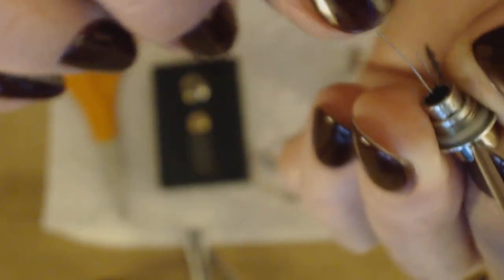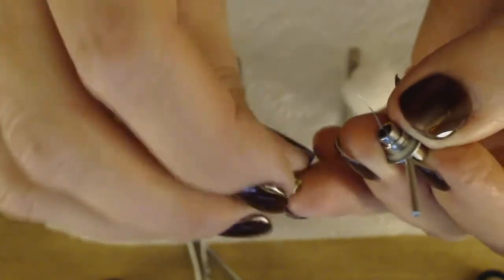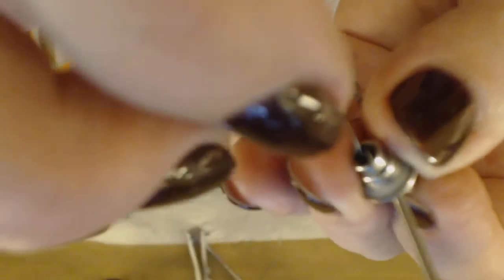Now I'm going to hold it down with my fingernail and I'm going to flip it over. I've got the two legs, and I'm going to bend the shorter of the two legs over against the cup. The other one I'm going to leave standing up. Then I'm going to take my insulator and thread it over the leg that's standing.